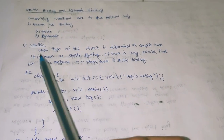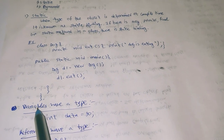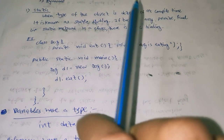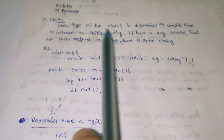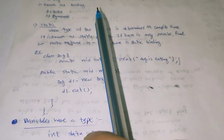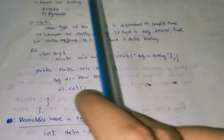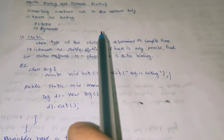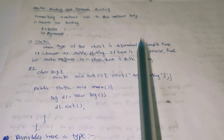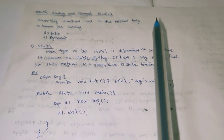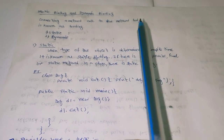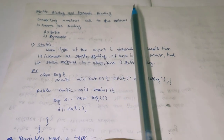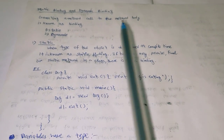Previously we discussed binding, static binding, variables, references, object types, class types, and the final keyword. We also previously learned that data variable overriding is not possible in Java — only method overriding is possible in Java.